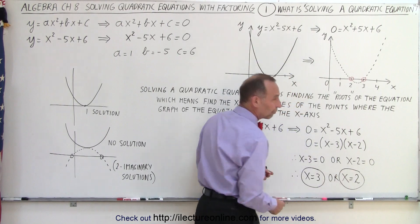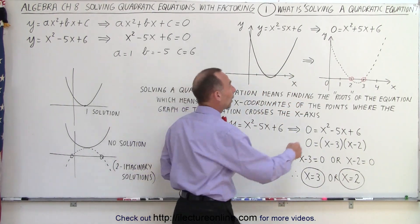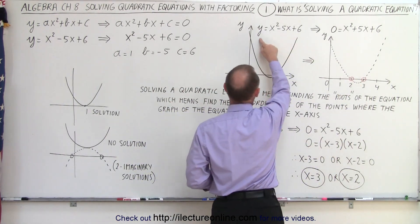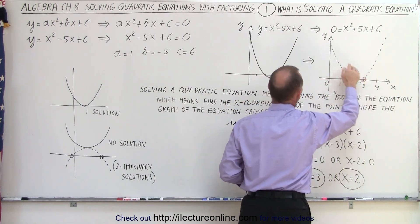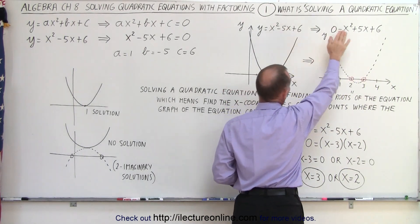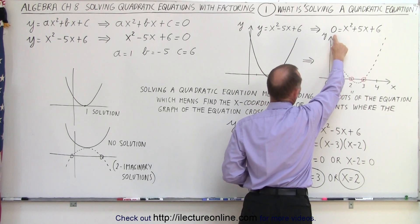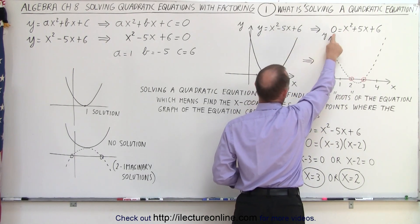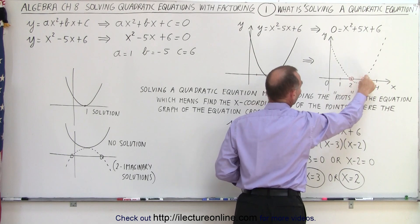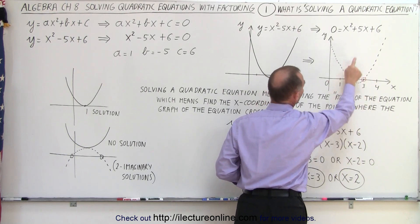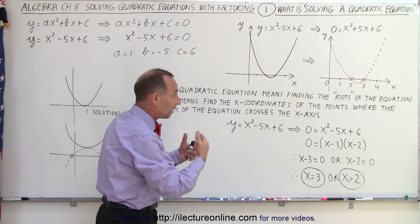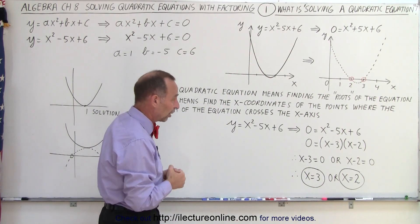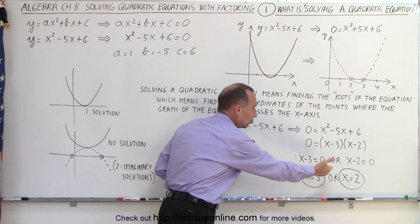And those are the two solutions we're looking for, the two places where the function, the function y equals x squared minus 5x plus 6, where it crosses the x-axis. So we turn this function into a quadratic equation. We set the left side equal to 0. That means we're looking for the place where it crosses the x-axis. We then solve that by factoring the right side, by factoring that trinomial. And then we find out what the two values are. And that's essentially what we're trying to do.